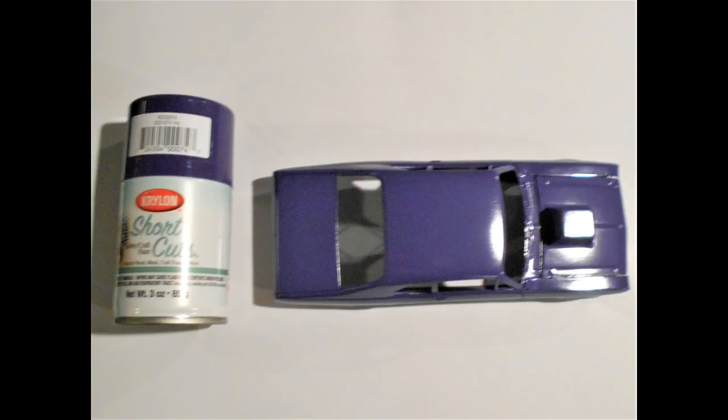I used this Krylon paint called Shortcuts in the flavor iris. It's kind of a bluish purple and I thought it went well. Give it a couple of mist coats with 10 minute intervals and then a couple of wet coats with the same 10 minute intervals until you get a nice even color.